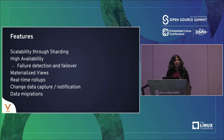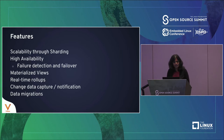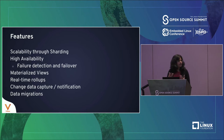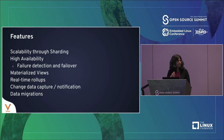VITESS also provides a whole range of data services: materialized views, real-time roll-ups or aggregations, change data capture, notifications, and data migrations. These features are facilitated by a part of VITESS called V-replication, which is built on top of MySQL replication as a filtered replication. For real-time roll-ups, VITESS streams an aggregate value — for example, the sum of column values matching a filter. If one of those values changes, VITESS adjusts the sum by subtracting the old value and adding the new value, keeping it up to date whether a row is inserted, deleted, or updated.